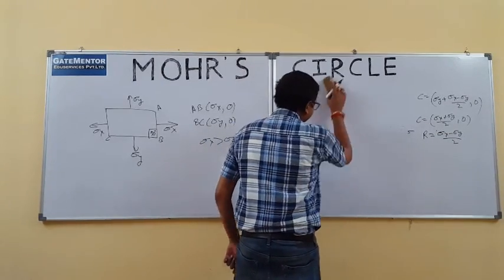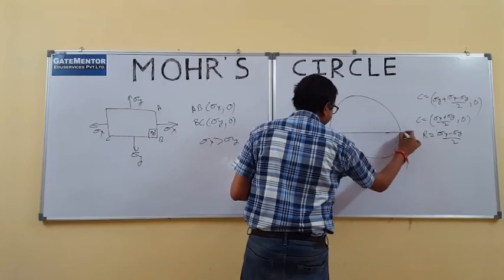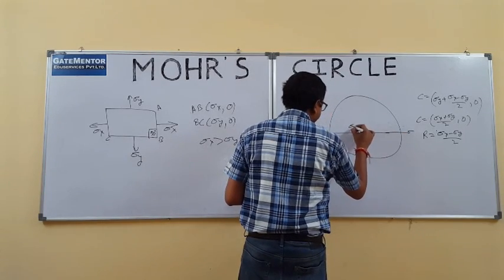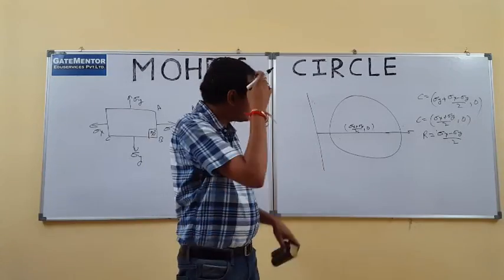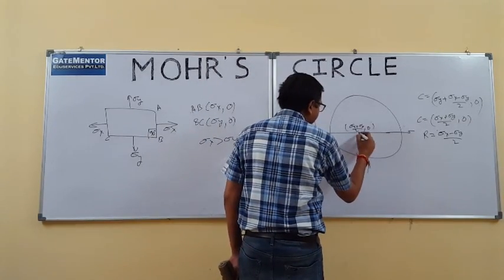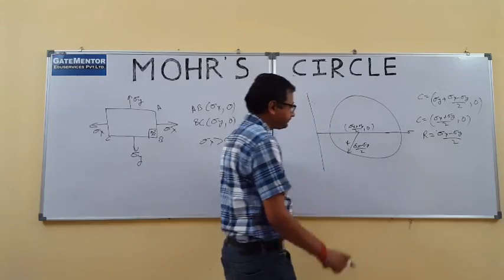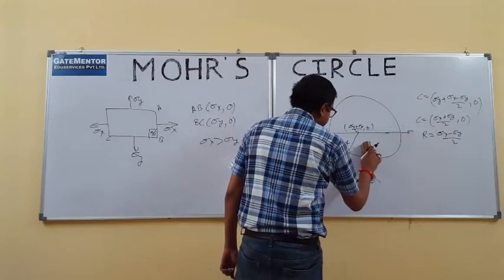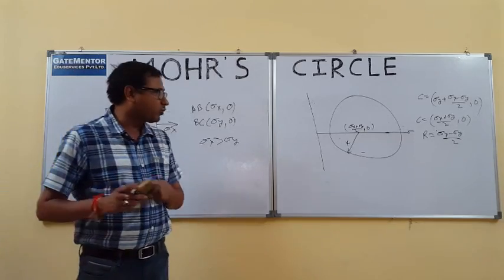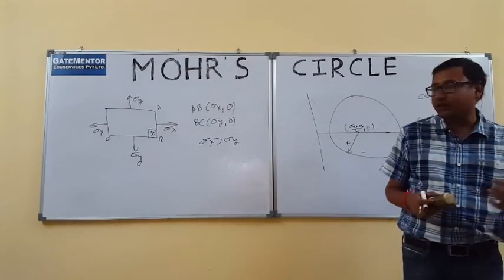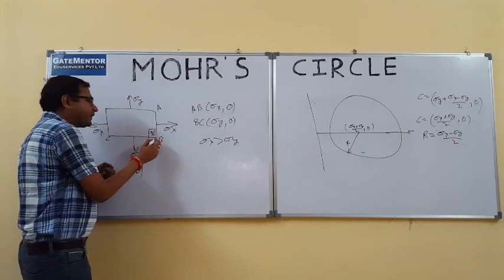If we draw the Mohr's circle, we know the center is at (sigma x + sigma y)/2 and zero, and the radius is (sigma x minus sigma y)/2. We can now draw the Mohr's circle. Plane MN makes an angle of theta degrees from the reference plane.